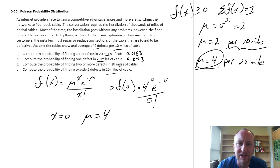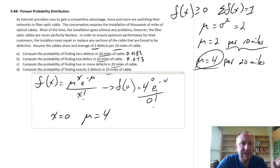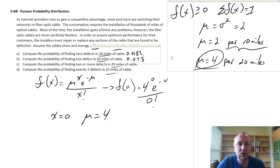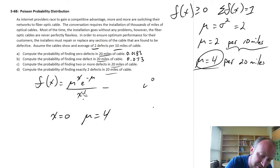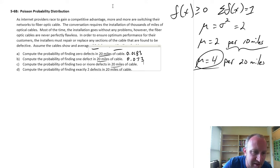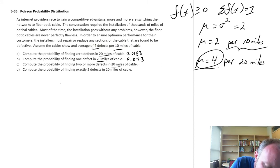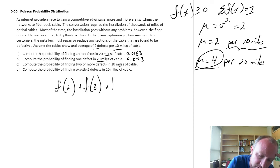A little bit faster than working with the formulas, I imagine. Part C, compute the probability of finding two or more defects in the 20 miles of cable. This one will be a little bit different, because what we would need to find for two or more, this implies figuring out the probability of two defects plus more, right?